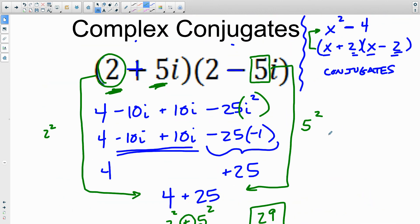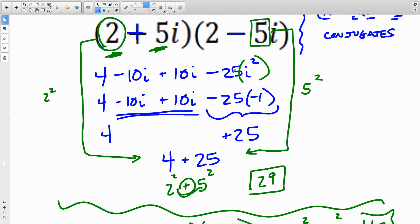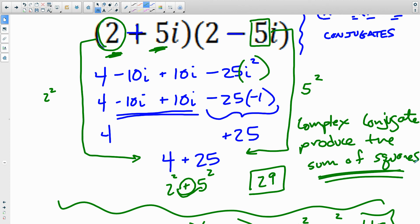So you want to write this down. Complex conjugates, in fact I'll write it down with you. Complex conjugates produce, produce meaning multiply together and create the sum of squares. Big deal here.